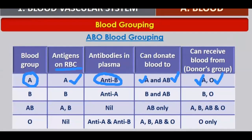Blood group A can donate to A and AB, and can receive from A and O. Blood group B has antigen B present on RBCs and antibody A present in plasma. Blood group B can donate to B and AB, and can receive from B and O.